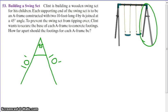It says, to prevent the swing set from tipping over, Clint wants to secure the base of each A-frame to concrete footings. So he wants concrete footings here and here. So before he builds this thing, he has to figure out how far apart those footings should be. In other words, we would like to figure out that distance.